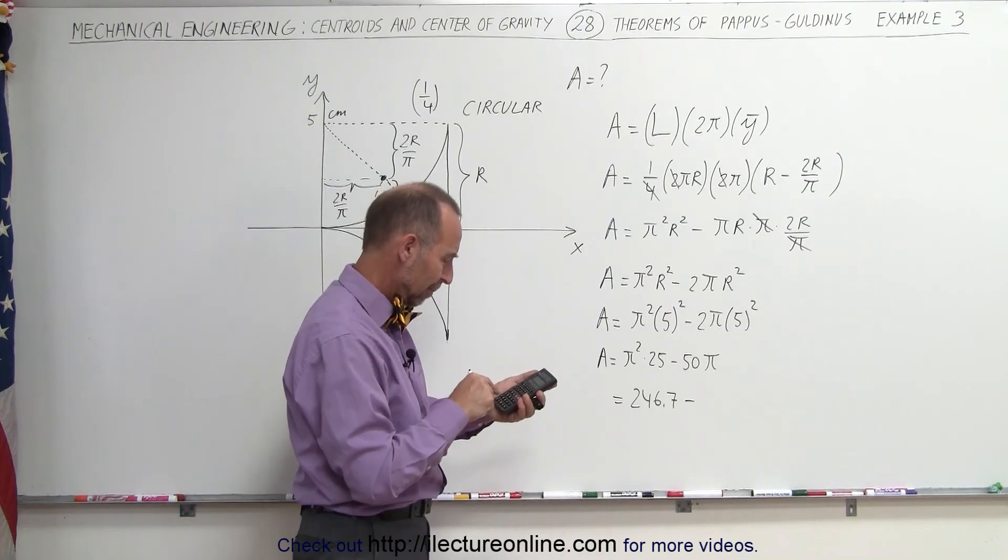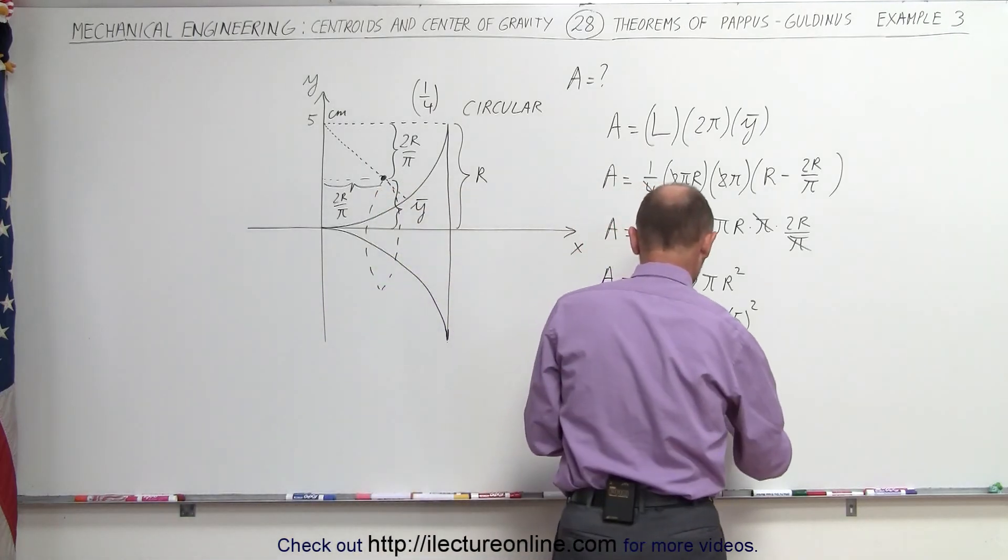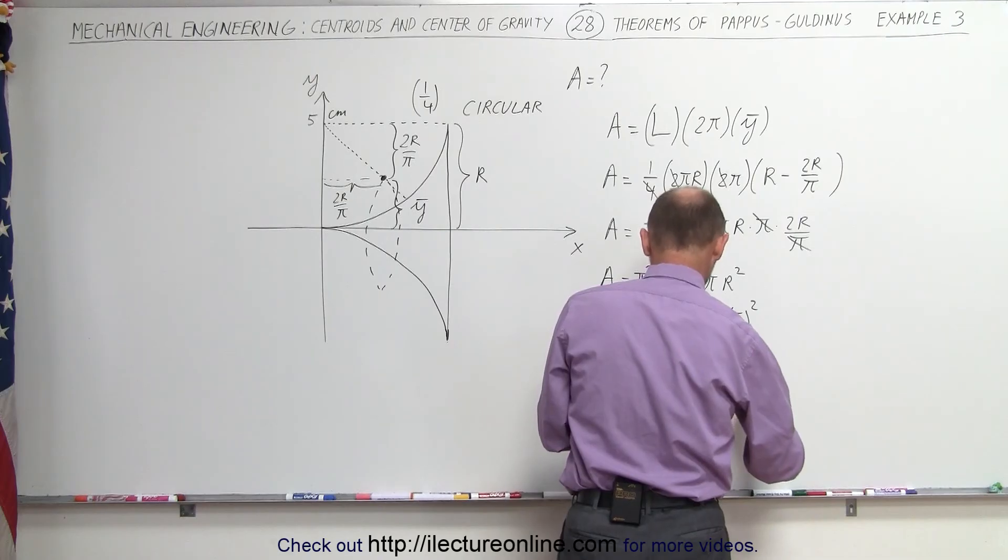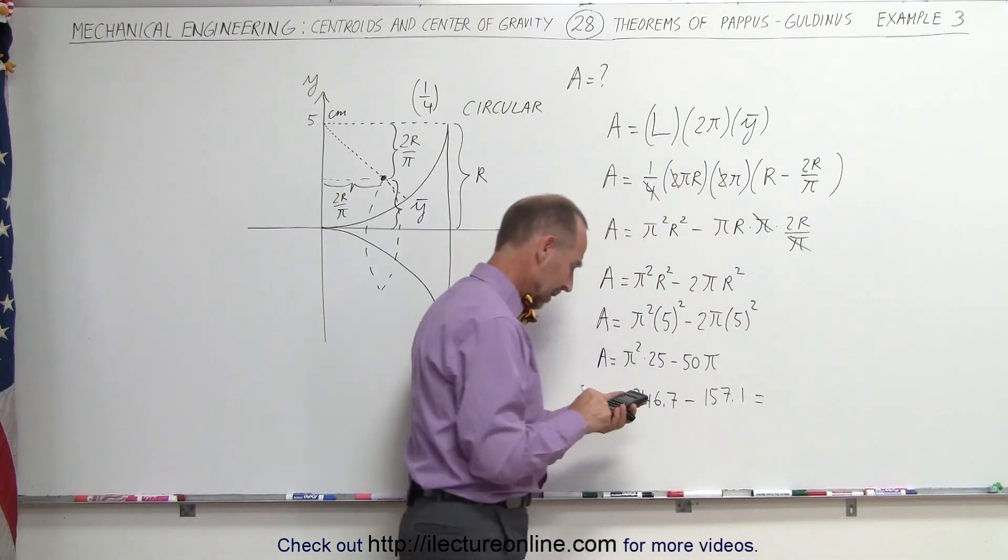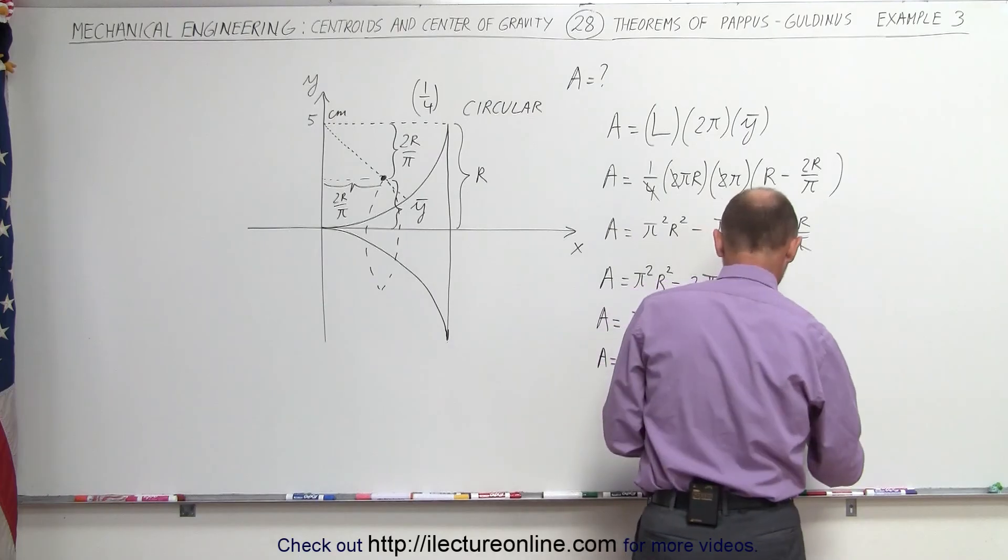50 times π minus 157.1. And then we plug equal, and that's 89.7.